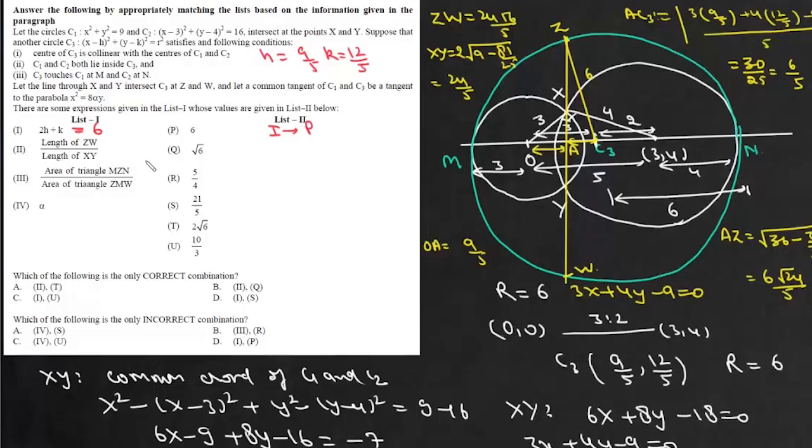Now second one is length of ZW upon length of XY. Now length of ZW is 24 root 6 by 5 and length of XY is 24 by 5. So this is equal to root 6. So that means this second it matches with Q.